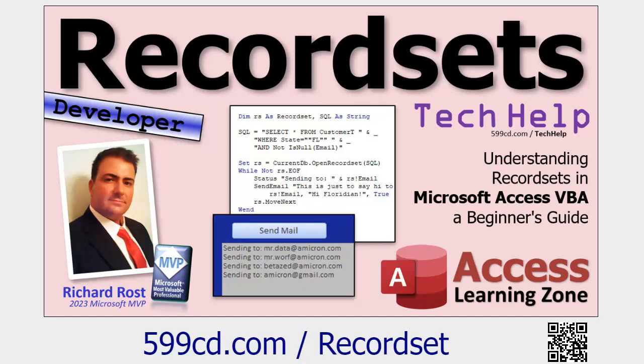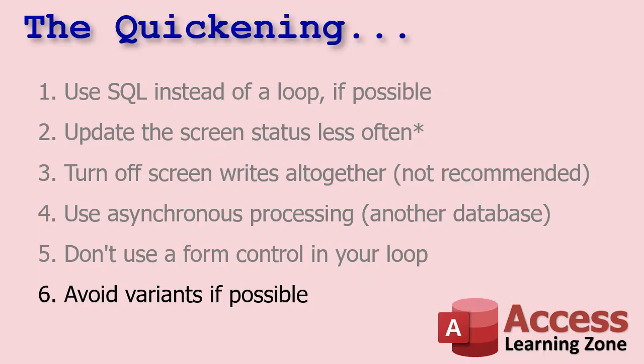If you don't know what a recordset is, go watch that video. Finally, avoid variants if possible. Variant memory types are just slow — they're slower than longs and strings. There's a long technical explanation why, but if you're looping through tens of thousands of records and you can use a number type like Long, use that instead of a variant and it'll speed things up.